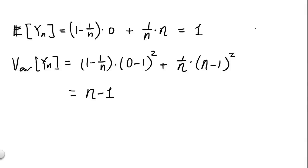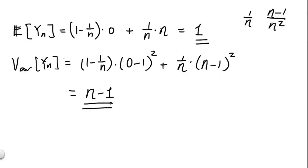Already we can see that while the expected value for xn was 1 over n, the expected value for yn is sitting right at 1 — it does not decrease as n increases. Also, while the variance for xn is (n minus 1) over n squared, the variance for yn is much bigger; it is actually increasing to infinity as n goes to infinity. These intuitions will be helpful for the remainder. In part b, we use the Chebyshev inequality to see whether xn or yn converges in probability.